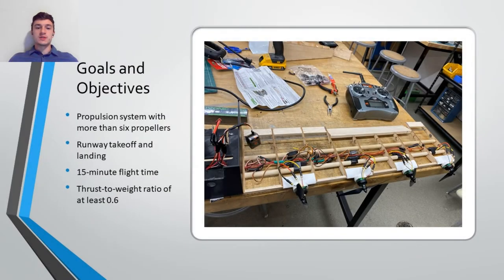The goals of this project were to design a remote control aircraft with a propulsion system of more than six propellers spread across the wings, capable of runway takeoff and landing, a 15 minute flight time, and a thrust to weight ratio of at least 0.6 to 1.